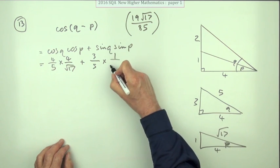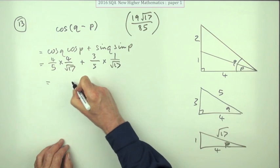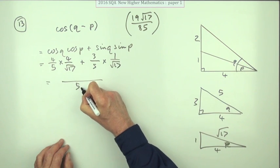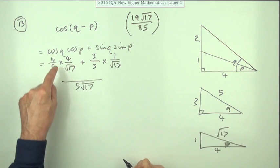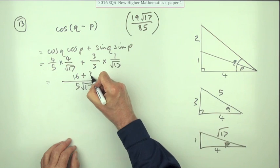Common denominator of five root 17, so it's just four fours are 16 plus three ones are three. So you've got 19 over five root 17.